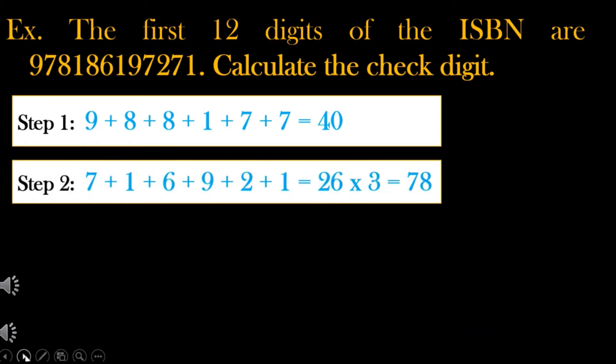Step 2: Add the even digits and multiply the result by 3. The even digits are 7, 1, 6, 9, 2, and 1. Adding them, we get 26. Multiplying 26 by 3, the result is 78.